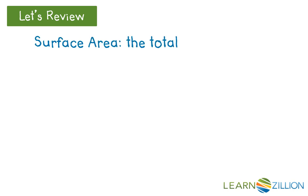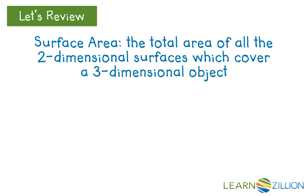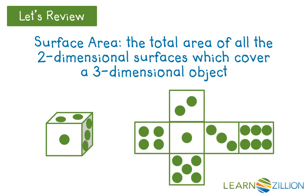Surface area measures the total area of all the two-dimensional surfaces which cover a three-dimensional object. If we wanted to know the surface area of this six-sided die, we would need to find the sum of the areas of these six squares which make up the surfaces of the die.